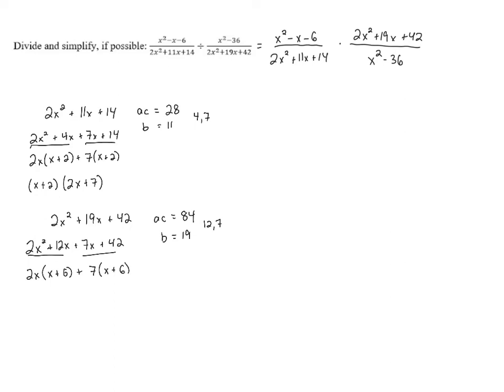Now that we've factored both of the groups, we look to see what they have in common. They both contain an x plus 6, so that is our common factor. And then the leftovers are 2x plus 7. So now we can go back to the original problem, and we can use those once we factor everything out.